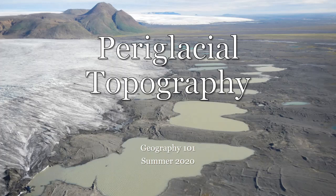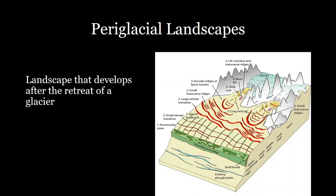Hello everyone, welcome back to our second to last lecture for Geography 101 Earth Systems. Today we're going to be talking all about periglacial topography. These are areas where we have receded glaciers. Periglacial landscapes are areas where a glacier has retreated, leaving exposed areas often with lots of permafrost. We're going to talk about the types of landscape features that can develop as glaciers retreat.